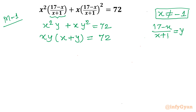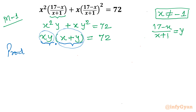Now one important point: if we presume that xy is one root of a quadratic equation and x plus y is the second root, then the product of those roots is xy times (x plus y), which equals 72.